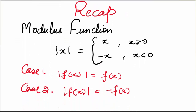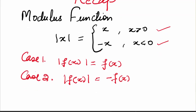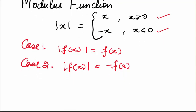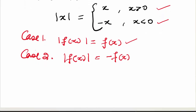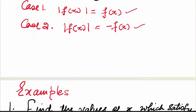You have already seen what a modulus function is. Mod of x is x when x is positive, and mod of x is minus x when x is negative. For all our problems, we would now be taking these two cases. In the first case, we'll take mod of whatever function is given to us as fx. And in the second case, we will take mod of fx as minus of f of x. Now these two will give us the solution.